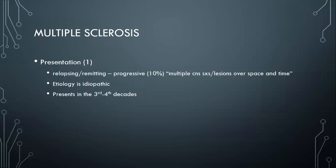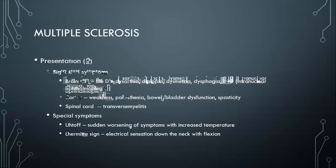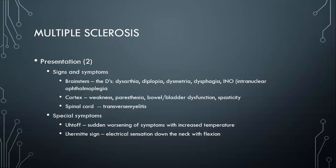Continuing with multiple sclerosis — how it presents. Brainstem problems you remember with the D's: dysarthria, diplopia, dysmetria, dysphagia. A specific one to remember is INO, intranuclear ophthalmoplegia — a problem between the connection between cranial nerve 6 and 3, disrupting eye movements. Cortex problems include weakness, paresthesia, bladder and bowel dysfunction, spasticity — these are the long tract type signs. There's also spinal cord involvement like transverse myelitis.